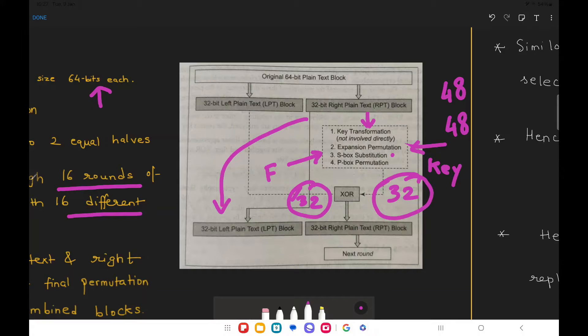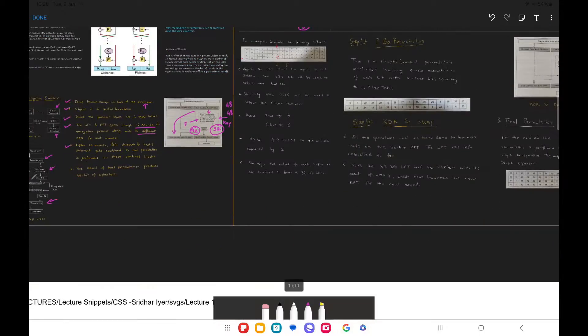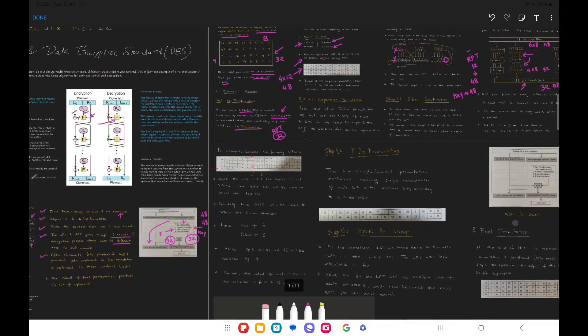Now what else is left? Last step inside the function block is nothing but what we call as a P-Box permutation. The P-Box permutation is again a very simple step. It is a straightforward permutation that we have already seen so far.